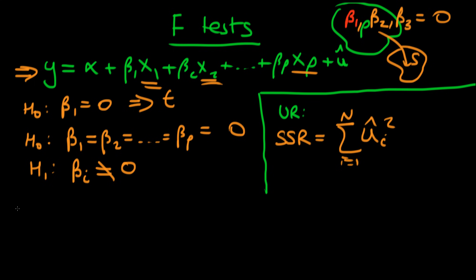We then perform what we call the restricted regression. In this particular analysis the restricted regression is just y = α — a constant. I haven't included any of the x variables from the unrestricted model. It's called the restricted model because I'm restricting it by saying the dependent variable doesn't depend on the independent variables — essentially just predicting y equals its mean.